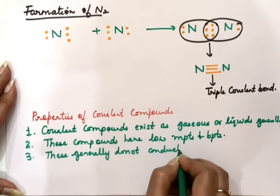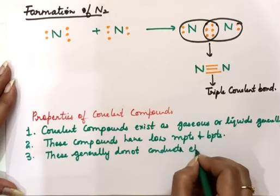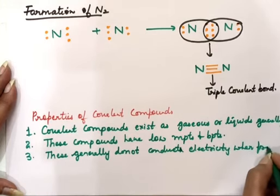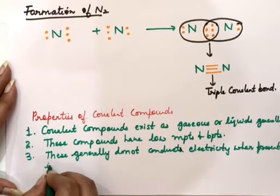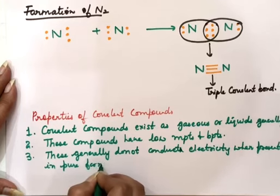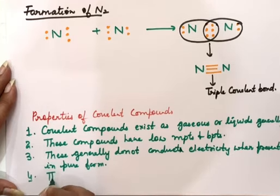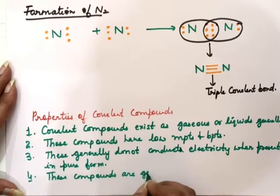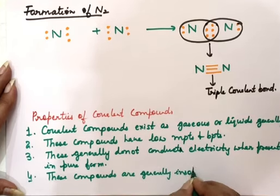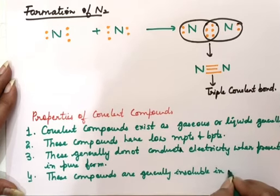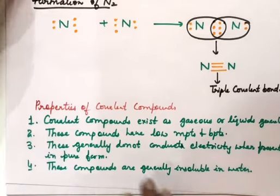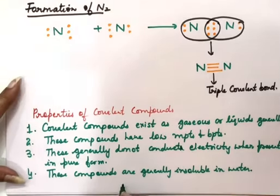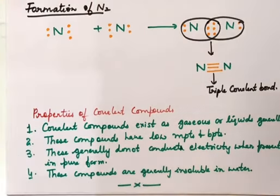Third, covalent compounds generally do not conduct electricity because there are no free electrons or ions in their pure form. Fourth, they are generally insoluble in water, except some covalent compounds that can form hydrogen bonding with water, which are soluble. There are many exceptions to these properties, but these apply to most covalent compounds.